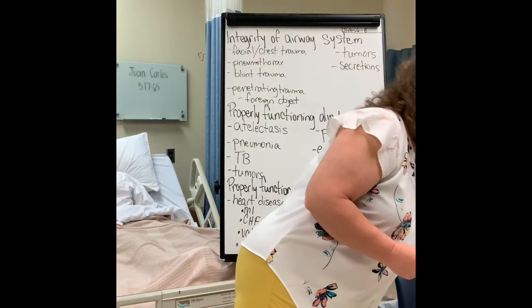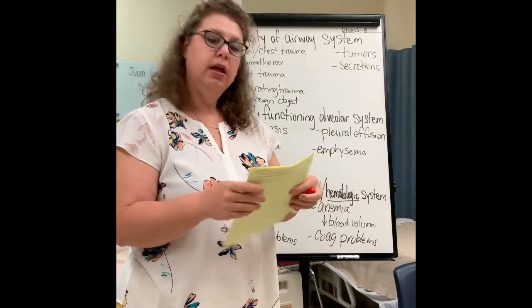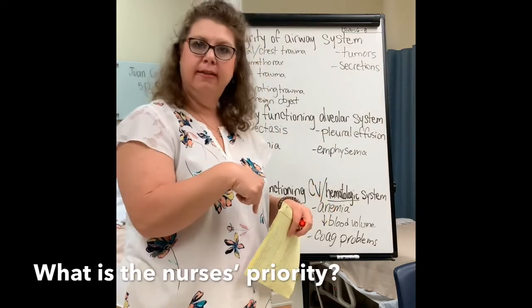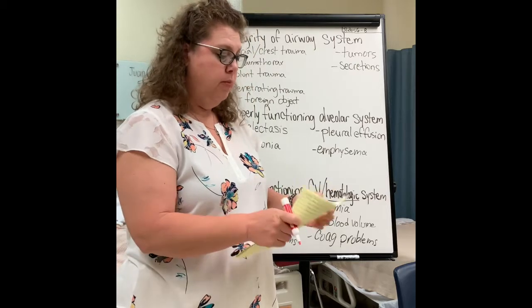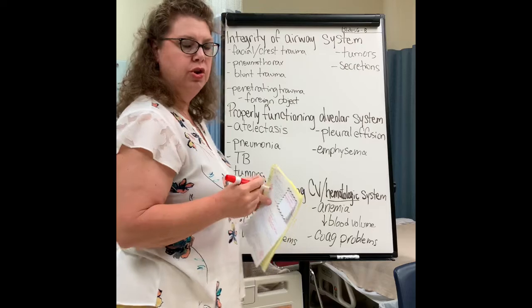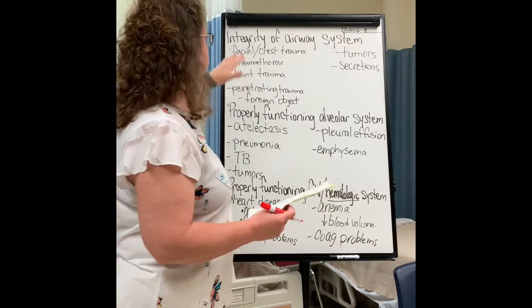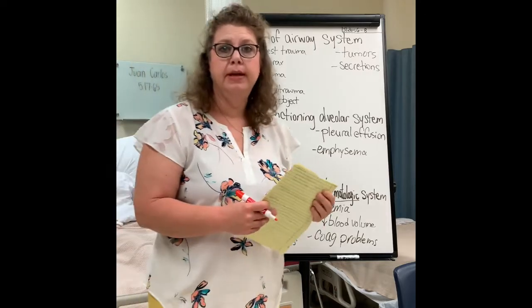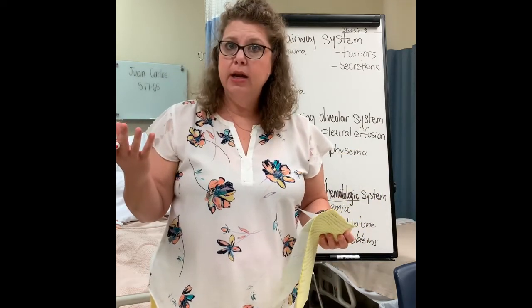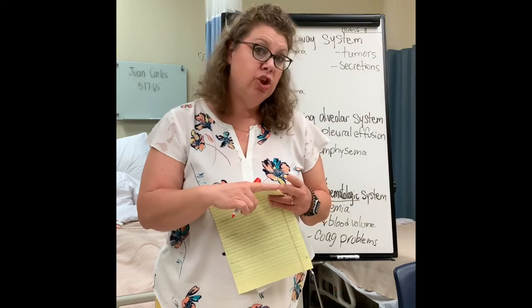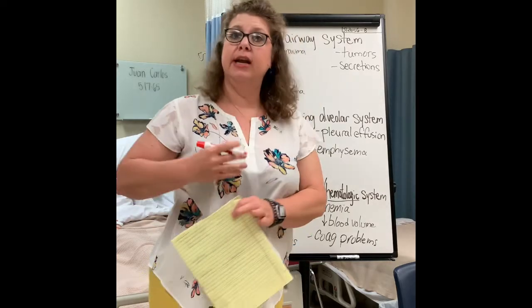Now we're going to go back in a different color and think about each one of these issues and ask: what can the nurse do? What is the nurse's priority for a client experiencing this issue? For the integrity of the airway system — that's how air comes in — let's say the client has facial and chest trauma. They might have bleeding. If they have chest trauma, they're going to be crunching down, holding that area, because it hurts to take a big deep breath.